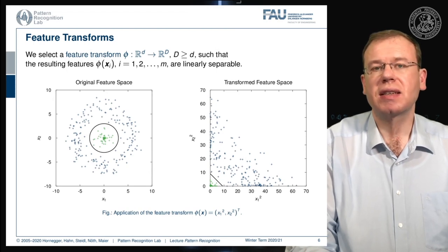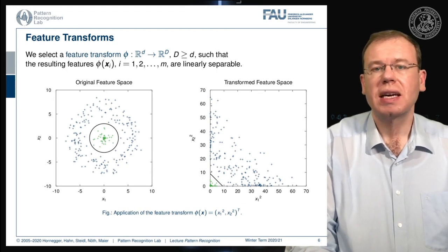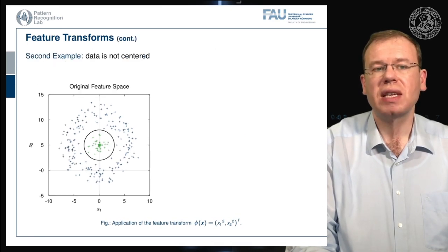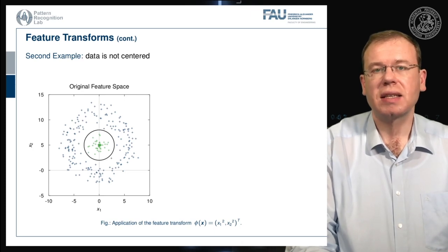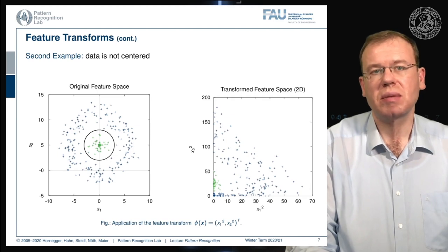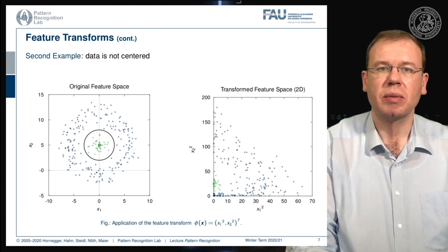Now this is a simple example. It may be more difficult and it already gets difficult if we start using data that is not centered. In this case if we apply our feature transform we see that unfortunately we are not able to separate these data linearly.